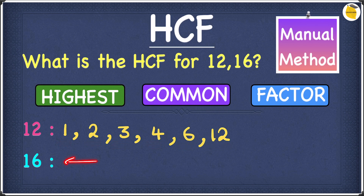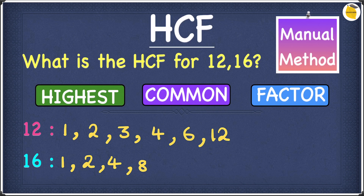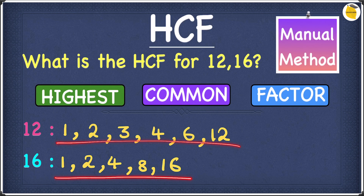Now let's find the factors for 16. Starting with 1, then 2 goes in, 3 does not go into 16, 4 does, 5 does not, 6 does not, 7 no, 8 yes, and then 9, 10, 11, 12, 13, 14, 15 do not, and finally 16 does. So the factors of 16 are: 1, 2, 4, 8, and 16.